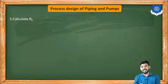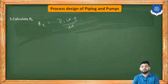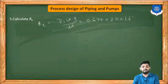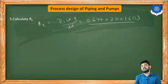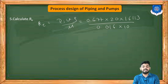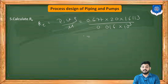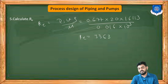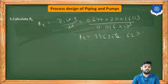Step 5: Calculate the Reynolds number. Re = D × V × ρ / μ = 0.677 × 20 × 1.6113 / (0.016 × 10⁻³) = 1,363,562, which is well above the turbulent flow threshold. So the flow is in the turbulent region.